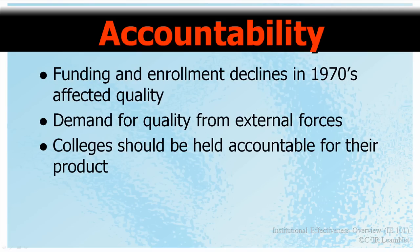Accountability is the third A in our triumvirate. Funding and enrollment declines in the 1970s affected the quality of American higher education. Accountability is largely driven by external forces, as increasingly governments — both local, state, and federal — accrediting agencies, students, and the public demand that colleges and universities be held accountable for their products. Pressures to demonstrate institutional effectiveness have risen as a result of the high cost of higher education, accrediting agency requirements, college graduates unable to find meaningful employment, employer dissatisfaction with graduate knowledge and skills, attacks on academe from within higher education, news stories criticizing colleges and universities, and the glacial nature of change within higher education.